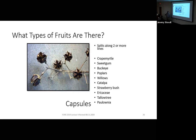By far our most common example of dry dehiscent fruits is capsules, which can split along two or more lines. On a crepe myrtle you can see the multiple lines the capsule splits along, and when they open you can shake the tree and a bunch of seed will rain down. Sweet gum 'gumballs' are actually just a bunch of capsules stuck together — when those capsules open you see a whole bunch of little seeds.